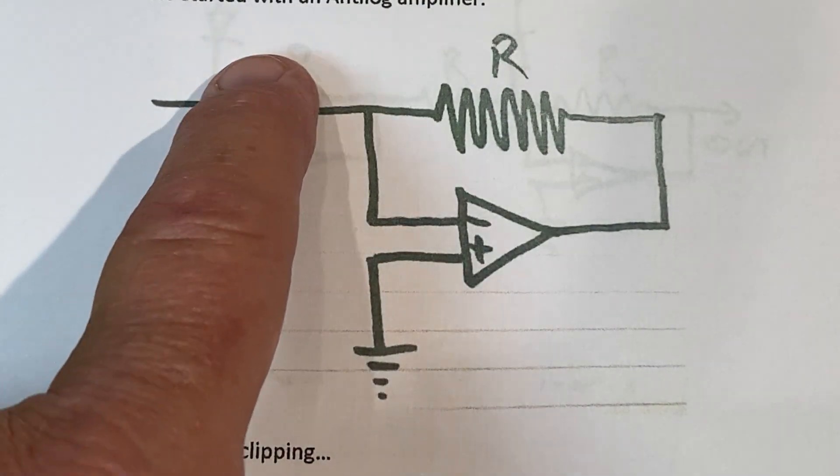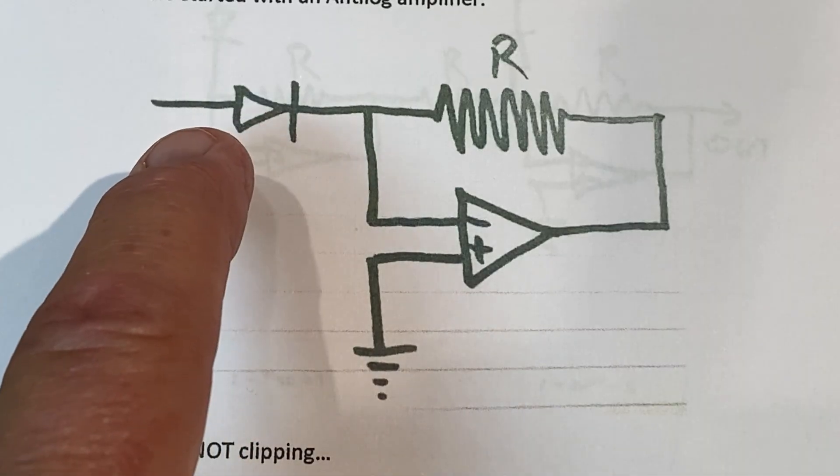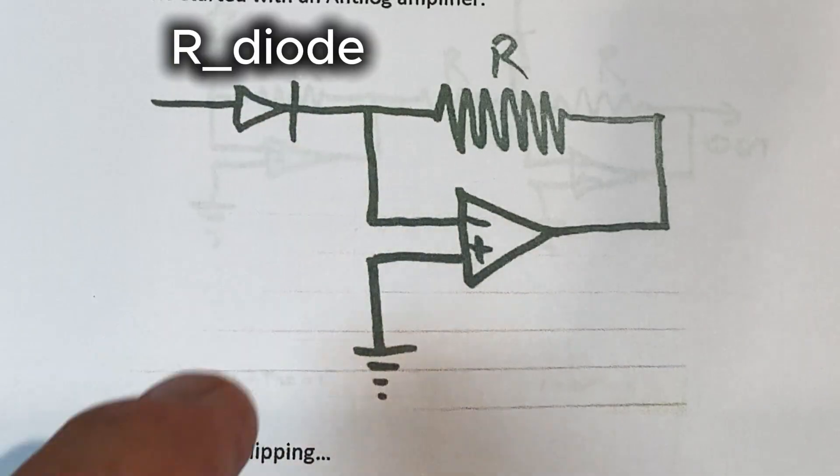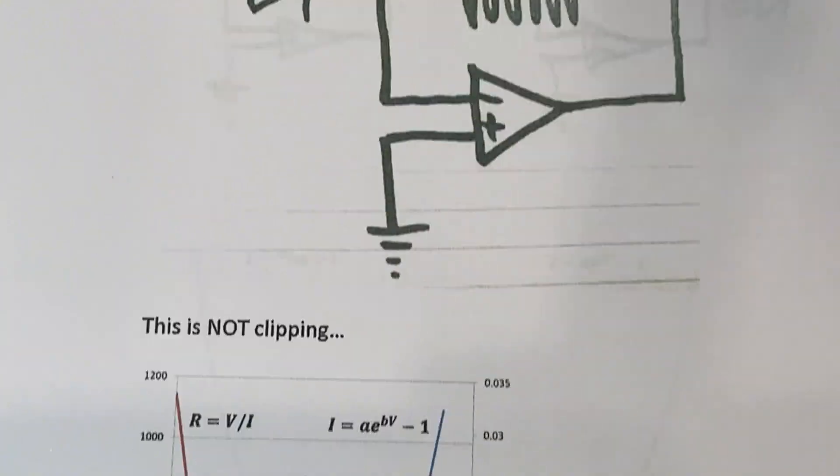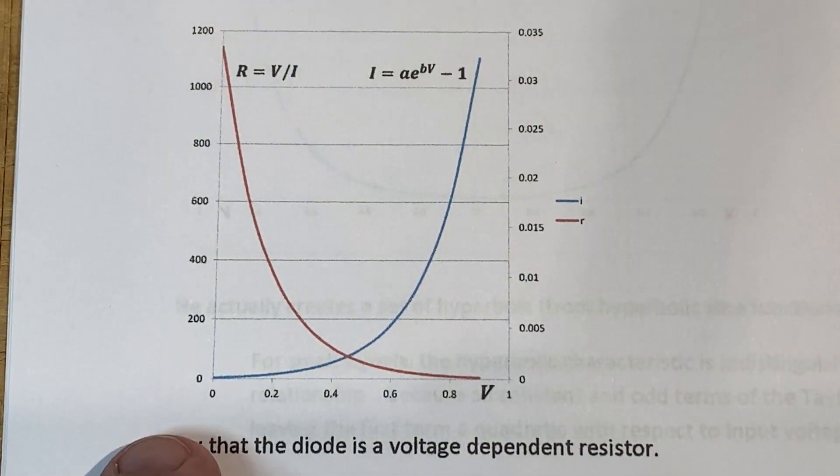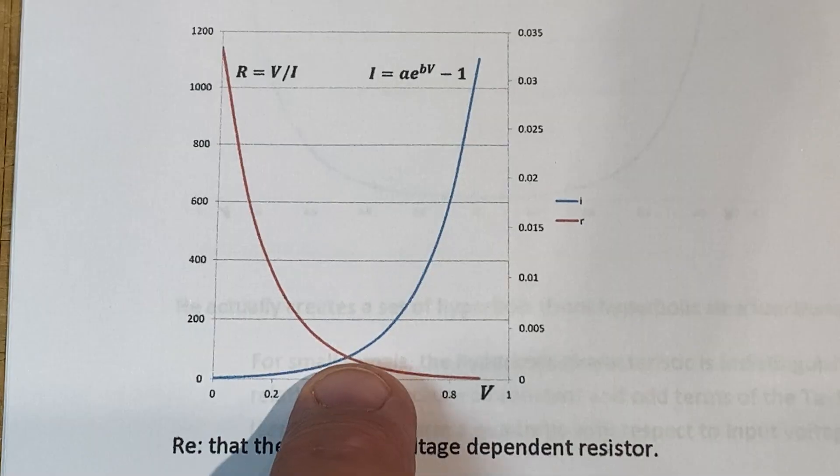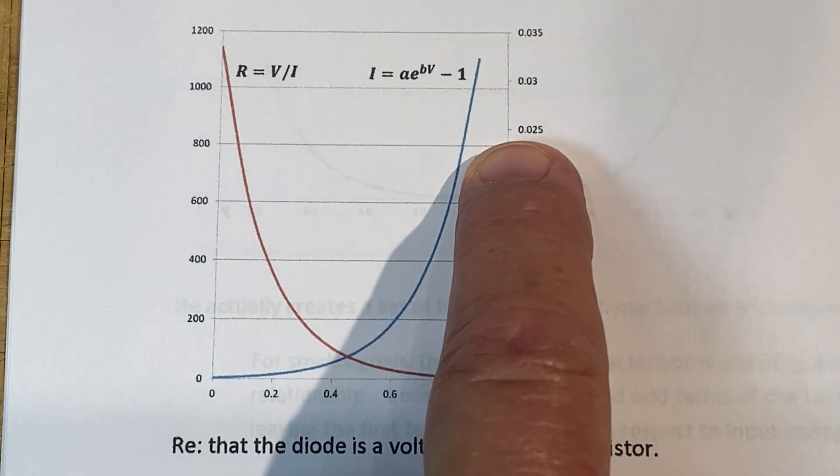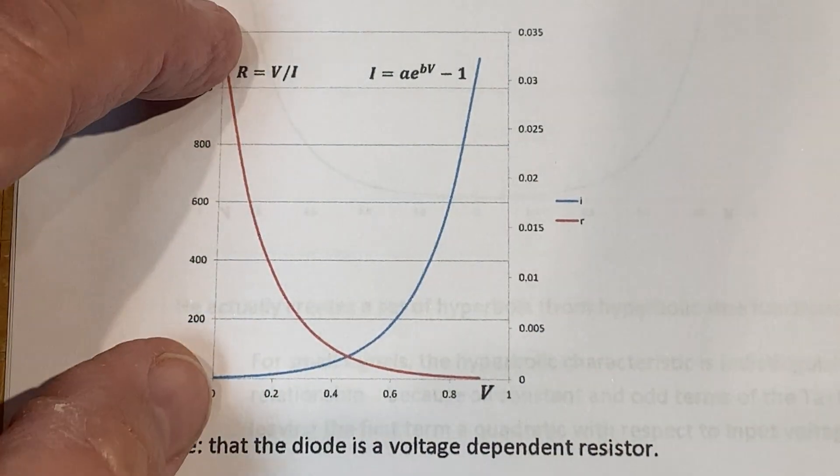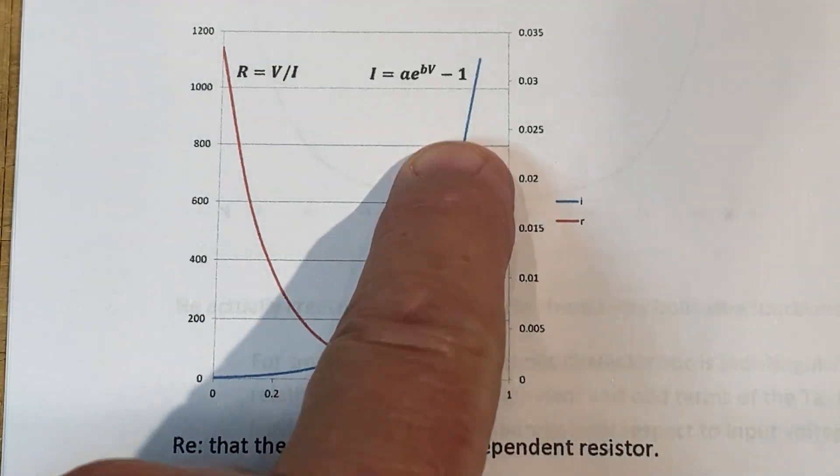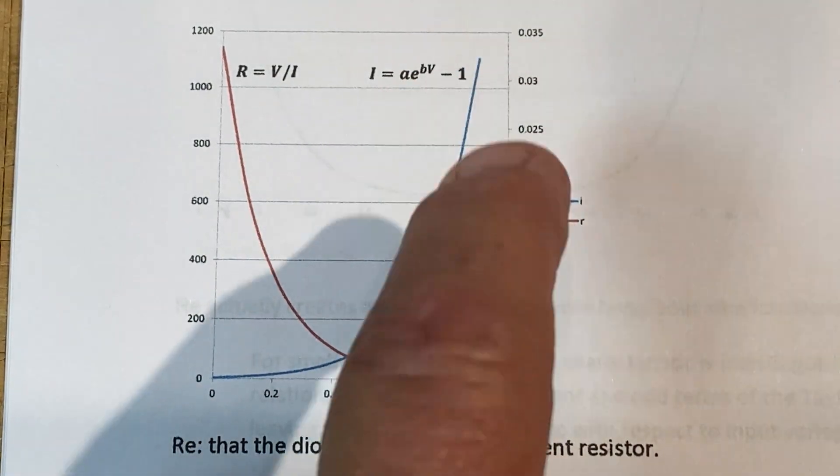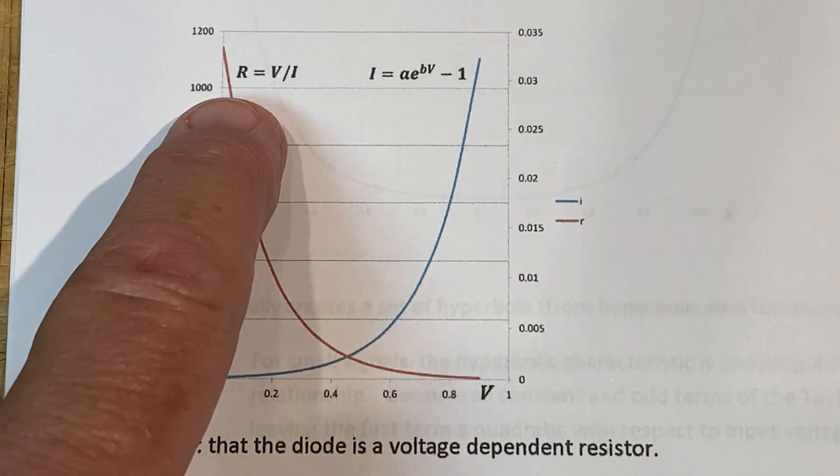The diode is acting as a voltage-controlled resistor. Now I know that I've talked in the past about how diodes, depending on the voltage that we have applied to it, the amount of current coming through has this exponential curve, and we can express that in terms of a resistance.